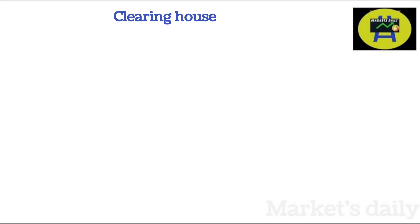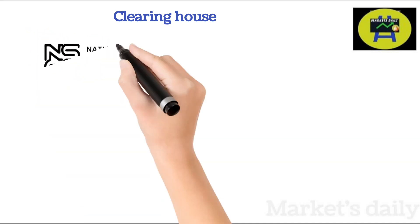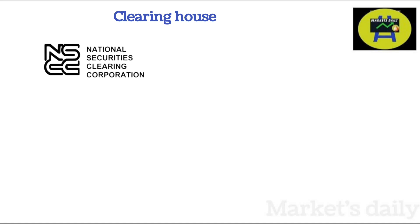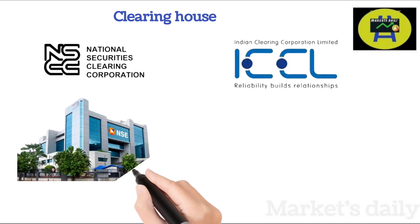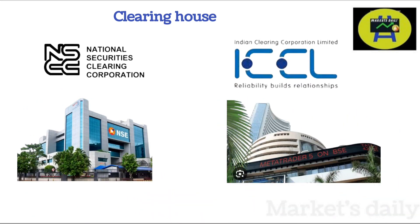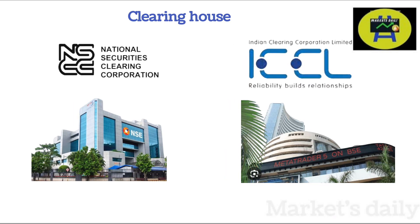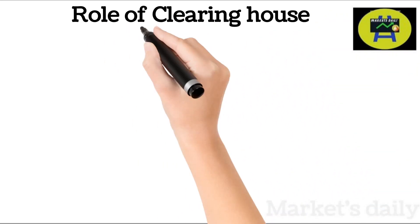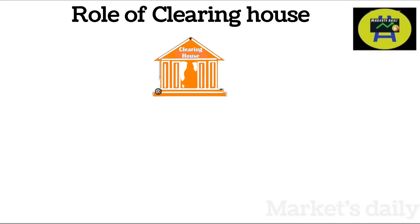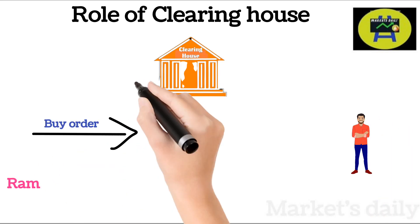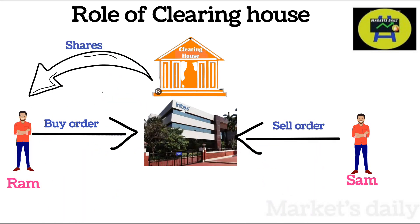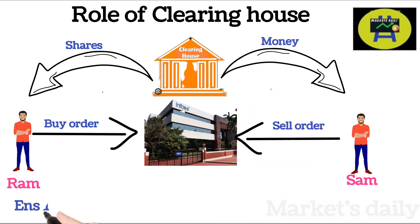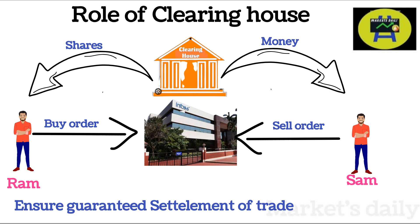Clearing house. There are two famous clearing houses in the stock market — NSCC, which stands for National Securities Clearing Corporation, and ICCL, Indian Clearing Corporation Limited. For NSE, NSCC acts as the clearing house. Role of clearing house: let's assume Ram buys a share of Infosys and Sam sells a share of Infosys. Shares will be credited to Ram's account and money will be credited to Sam's account — this function is done by the clearing house. It ensures guaranteed settlement of trades.